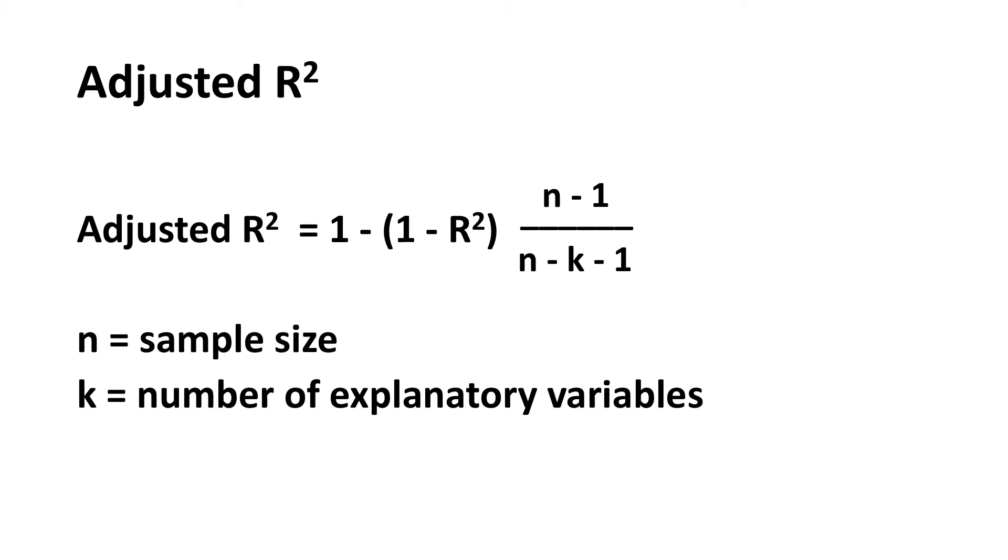Since the number of explanatory variables is in the denominator of that ratio on the right-hand side of the formula, this means that if you increase the number of explanatory variables, but that variable that you bring into the model doesn't really increase the R-squared by very much, it's going to lower the adjusted R-squared. In other words, if you just add a bunch of variables that really don't belong in the model, it's going to pull down that adjusted R-squared.